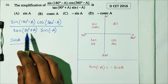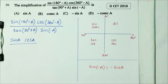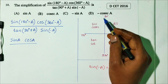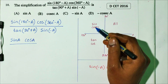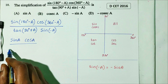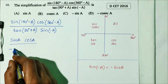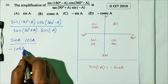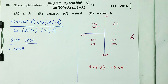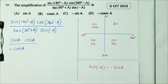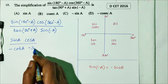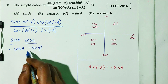Tan(90 plus A): at 90 plus A, tan changes to minus cot A. Sin(minus A) equals minus sin A.